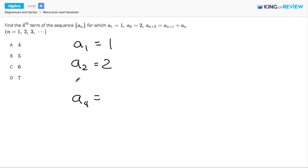Well, let's go in order. Let's find a3 next. If n plus 2 is equal to 3, that means n plus 1 is 2, and n is 1. So a3 is the sum of a2 and a1, which, according to the above information, is 2 plus 1, which is 3.